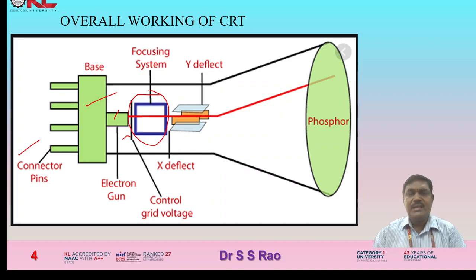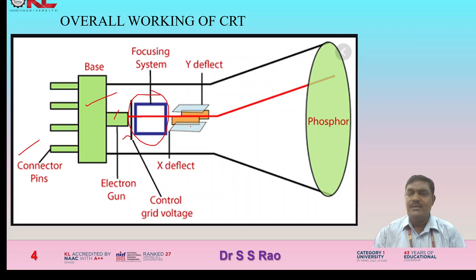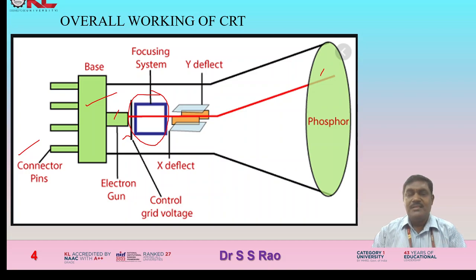Beams of electrons pass through the electron gun and then through the focusing system. Two sets of deflectors are provided: horizontal deflectors and vertical deflectors — the Y deflector and X deflector. With the help of these deflectors, the electron beams are focused on the phosphor screen both vertically and horizontally, guiding where the dot hits on the phosphor screen.